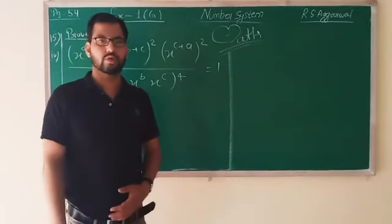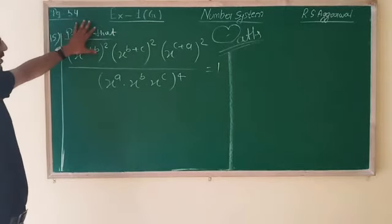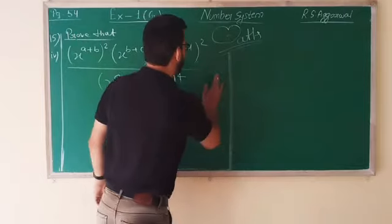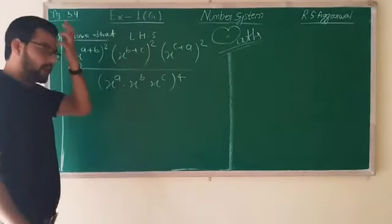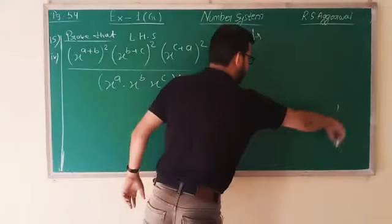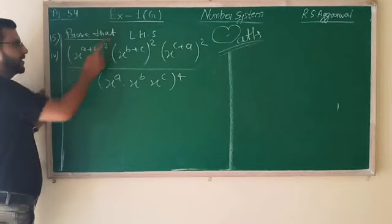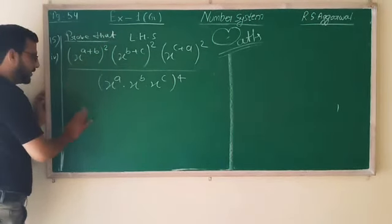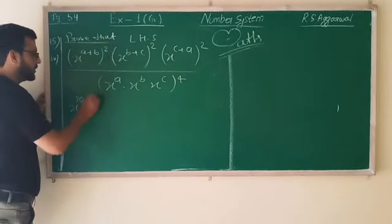Something power 0, variable power 0, is known as 1. And this is our RHS and hence proved. Right. Okay. Now solve one more question, 15 part 4. Again proving question - prove that this value is equal to 1. So equal, remove. Here use left hand side. One has to be proved. Power of a power, so multiply.